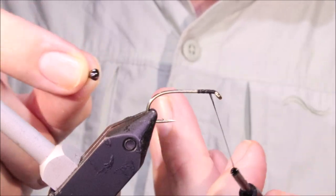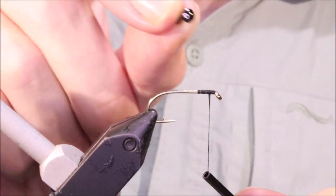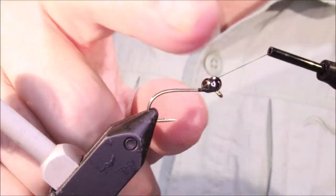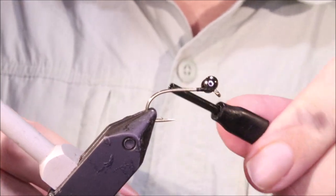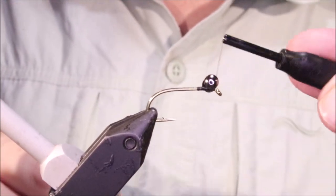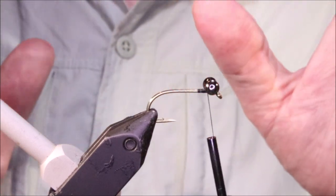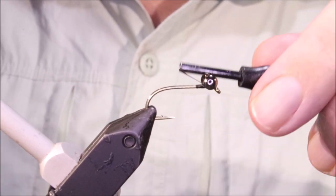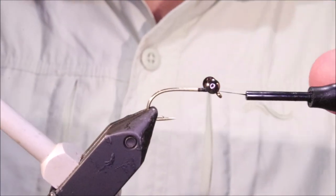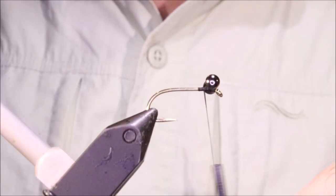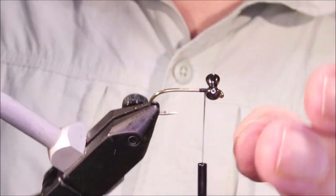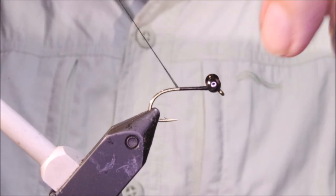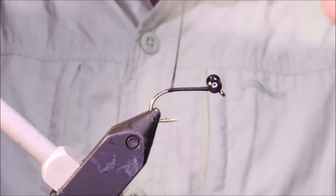I've started some black thread, this is UTC 140. 140 is fine, you can use 70 if you wish. I've just got to lash on some black nickel brass dumbbells. You can use lead, you can use black bead chain, up to yourself. Got to get them on, configure them on, take some posting wraps. At this stage you can still adjust them. Look for the front, make sure they're fine. And I'm going to come down the shank, back up.